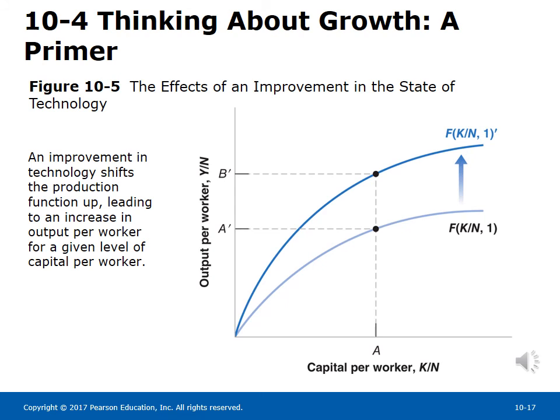Figure 10-5 shows the effects of an improvement in the state of technology. An improvement in technology shifts the production function upward, leading to an increase in output per worker for a given level of capital per worker, such as at point A.